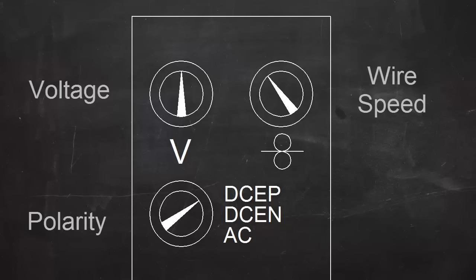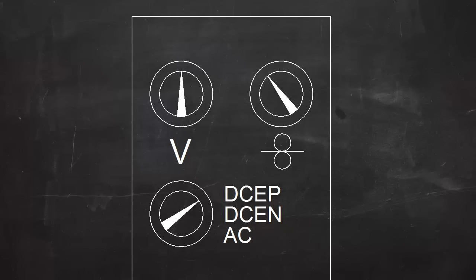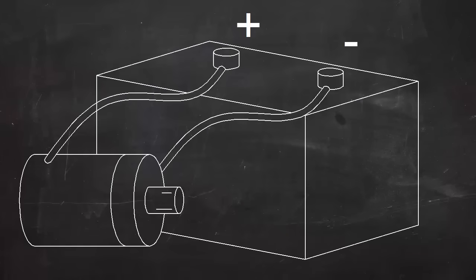The trigger on the gun is just an on-off switch. For most MIG welding, the current is direct current or DC. DC is like the current flowing from a car battery. One wire is always the negative and one is always positive.